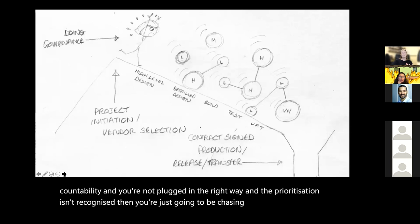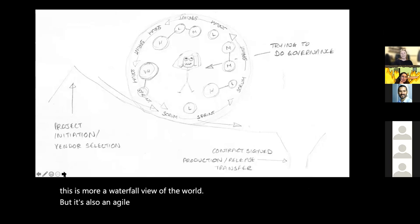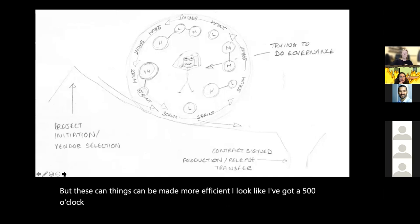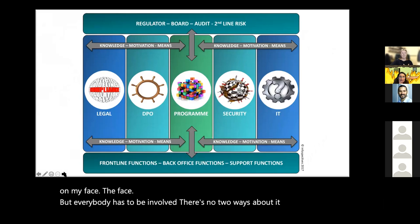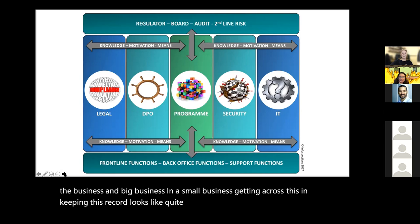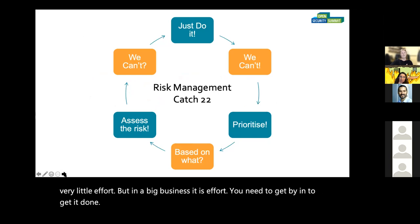Obviously this is more a waterfall view of the world, but there's also an agile view as well. These things can be made more efficient. Everybody has to be involved — there's no two ways about it, especially in big business. In a small business, keeping this record looks like quite a mature way of doing things with very little effort, but in a big business it is effort. You need to get buy-in to get it done, given the risk management catch-22.